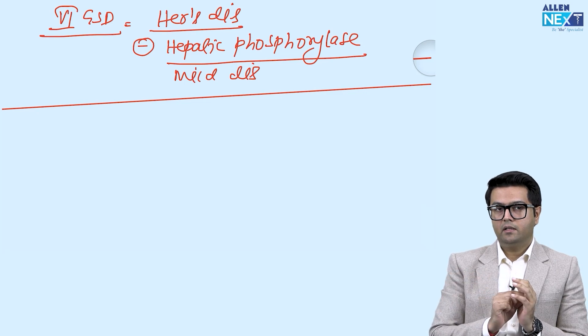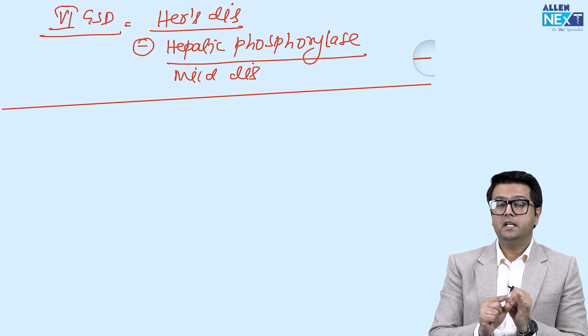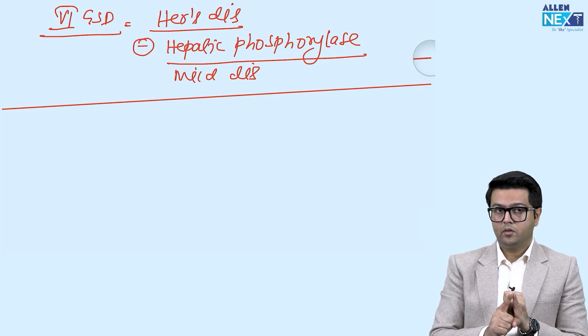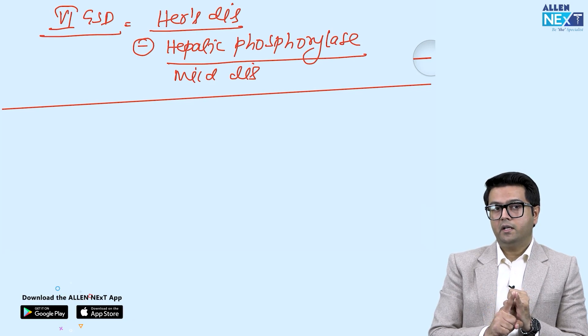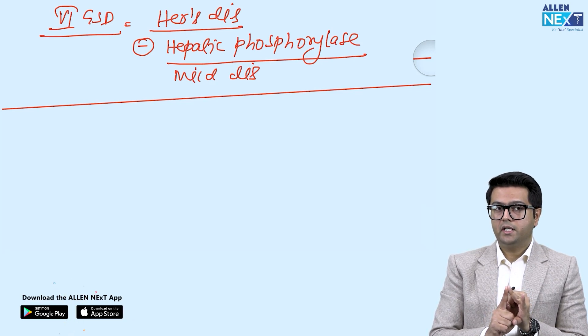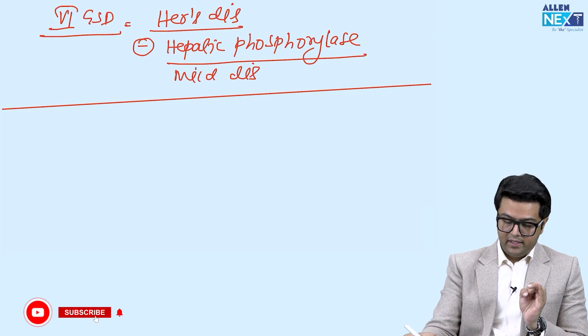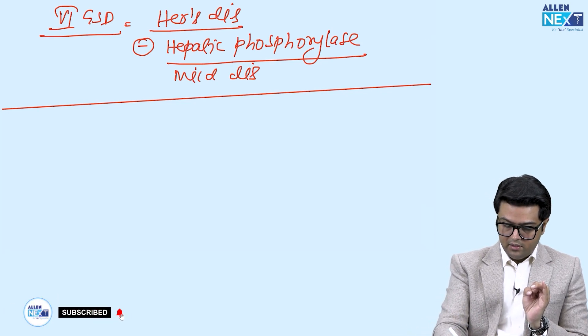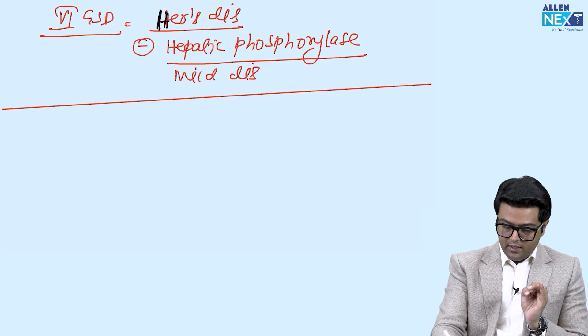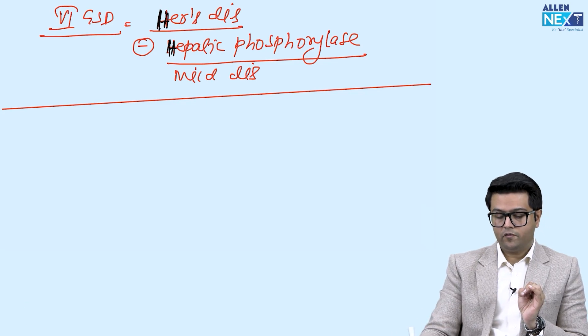If you look at the MCQ, if you find that the question says that there is muscles affected, if muscles affected, it cannot be Von Gierke's and Hers. Hepatic phosphorylase.